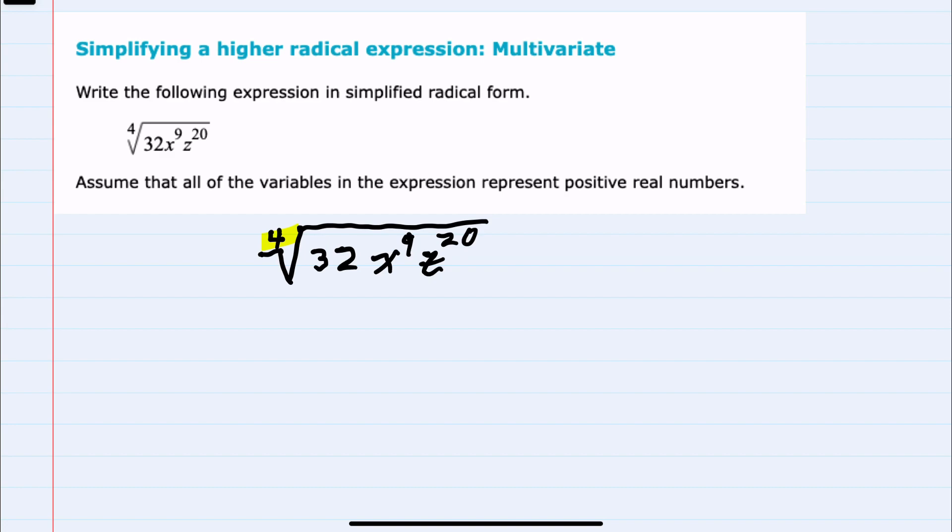To do so, I'm going to rewrite what's underneath the radical so that it has either a power of 4 or a power that is a multiple of 4.